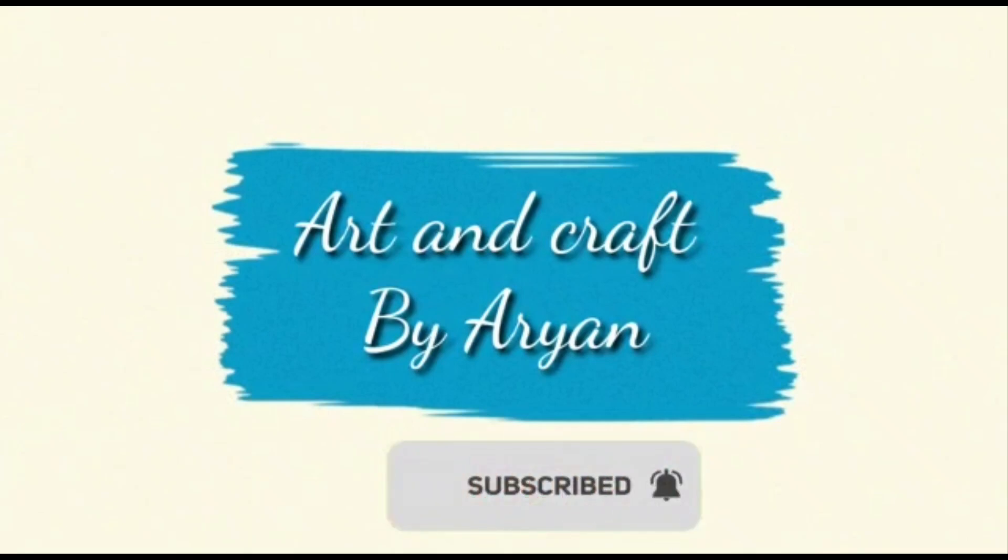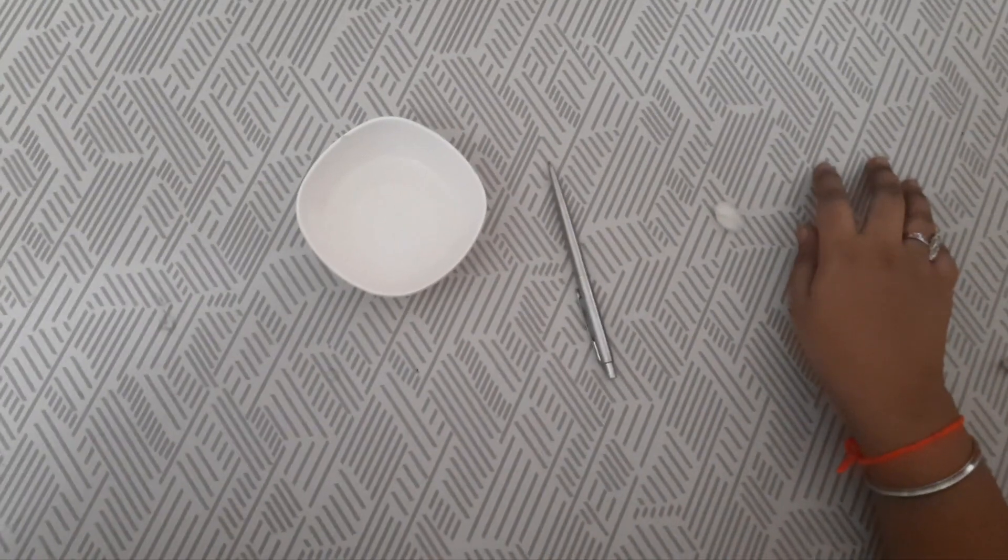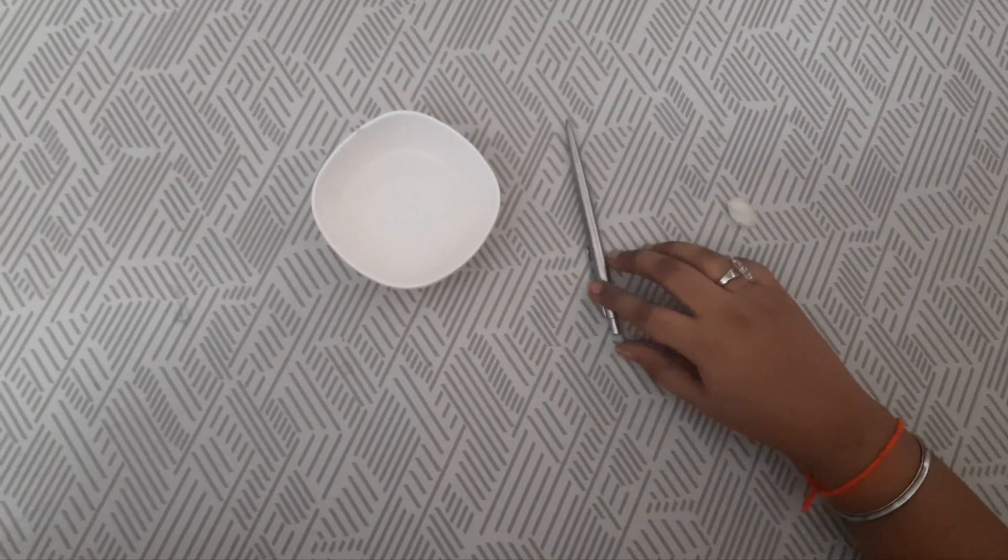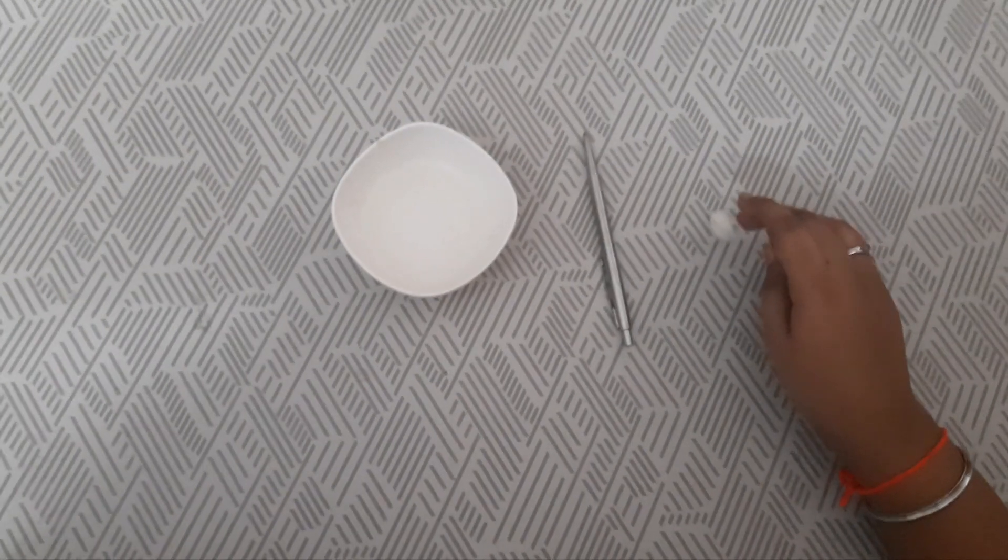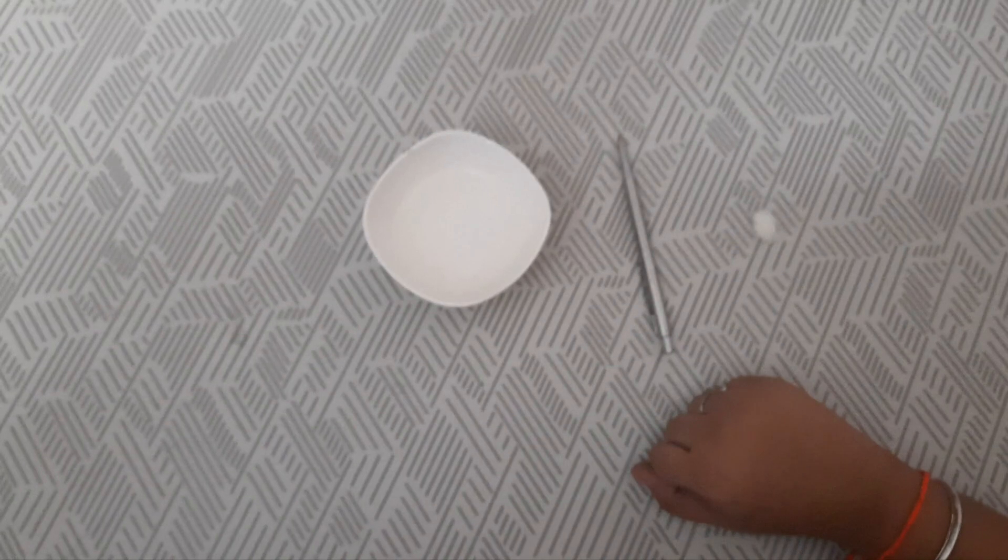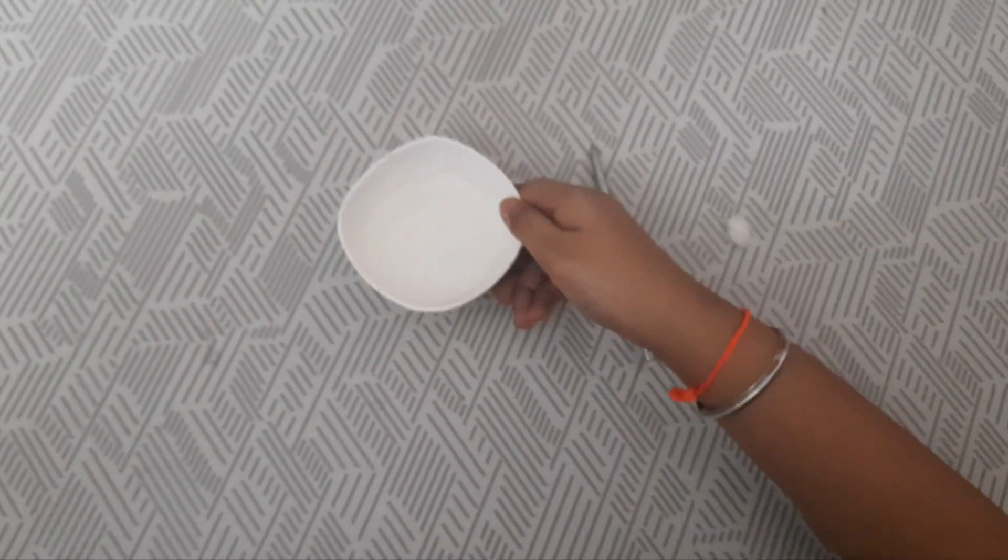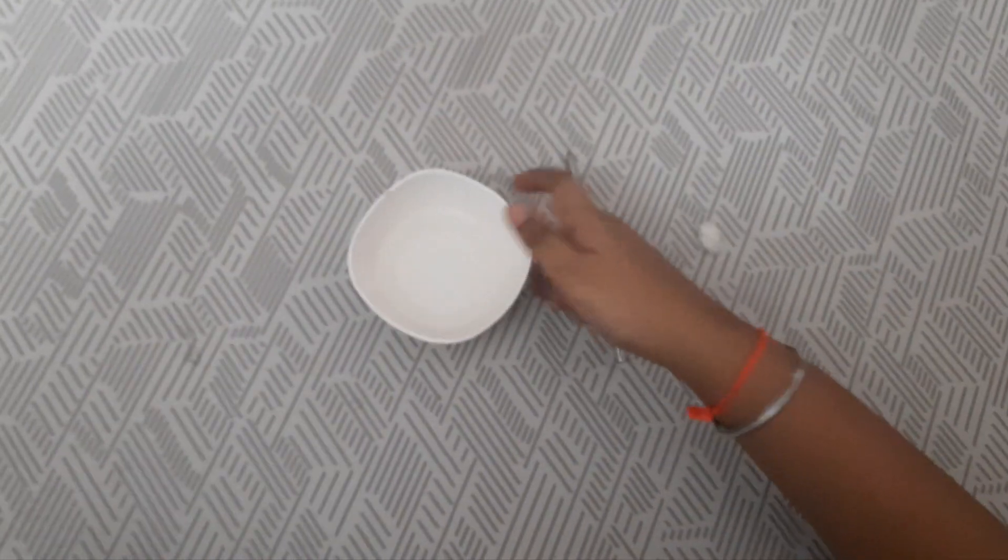Hello everyone, welcome to Adding Graph channel. Today let's see how to make a stylus pen with a normal steel pen. The requirements you need for this experiment are a bowl of water, a cotton piece, and a steel pen.